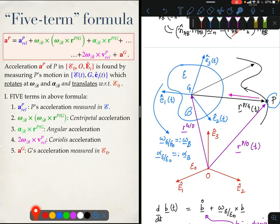These are the five terms of the five-term formula. Let me try and now discuss terms second, third, and fourth in a little bit more detail and see if I can help you gain some physical insight into their presence.